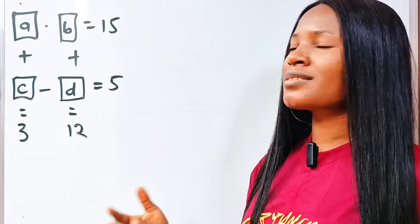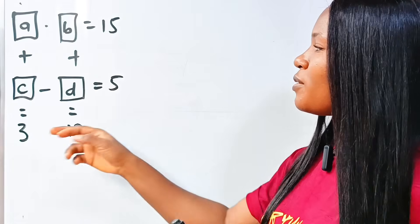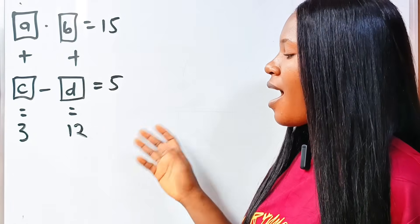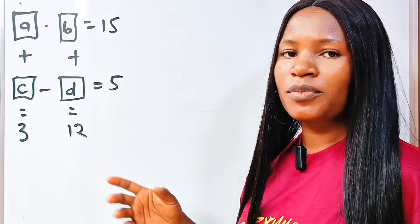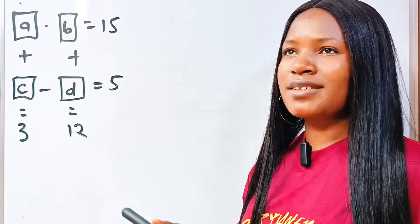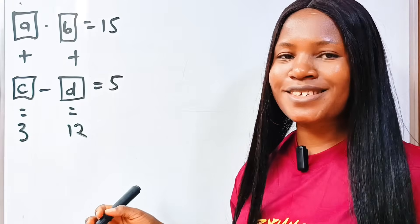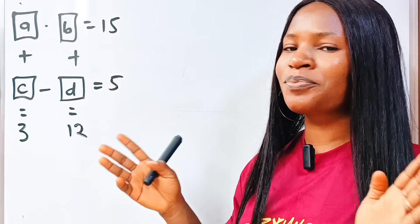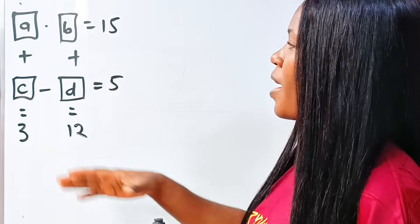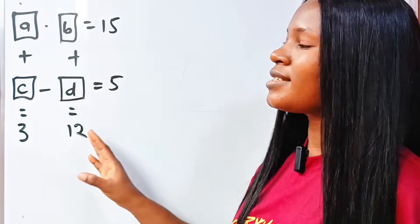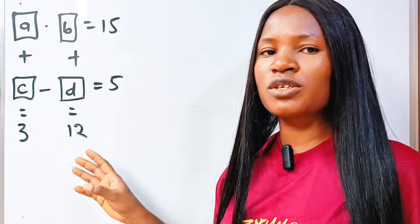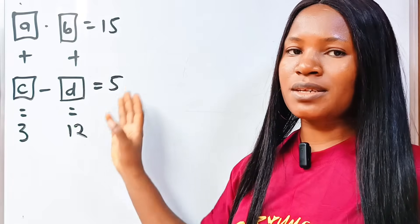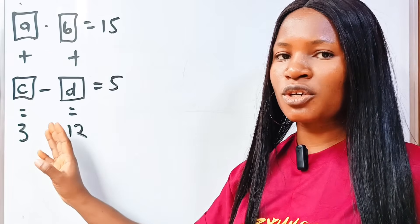Now we are asked to find the values of A, B, C, and D. The first thing we are going to do is write out the system of equations from this illustration.